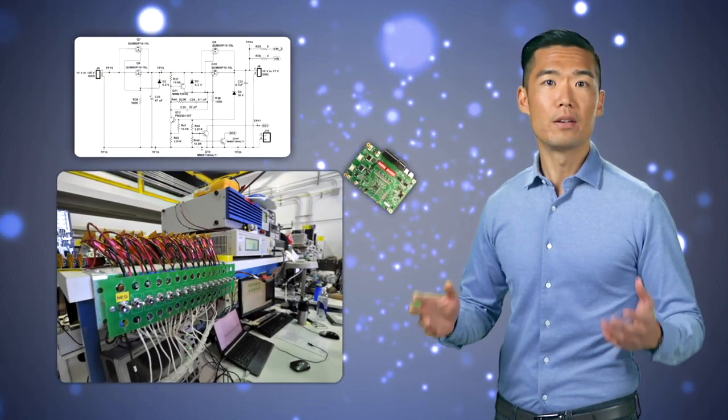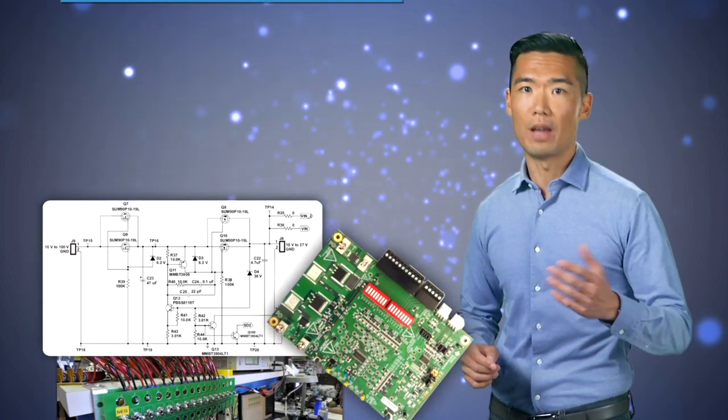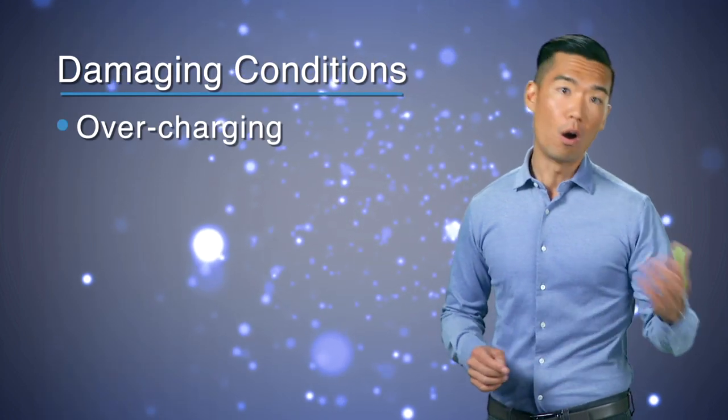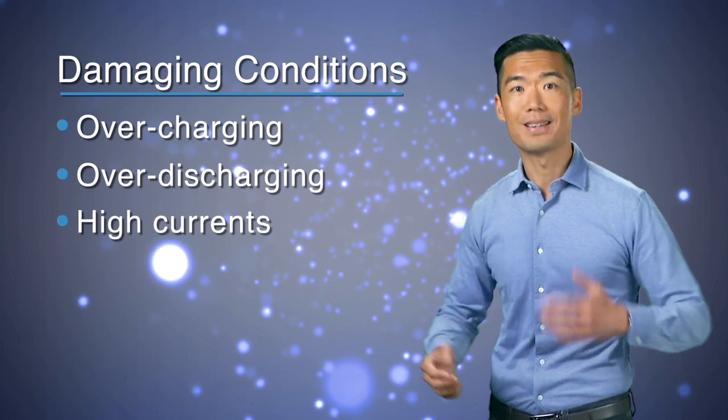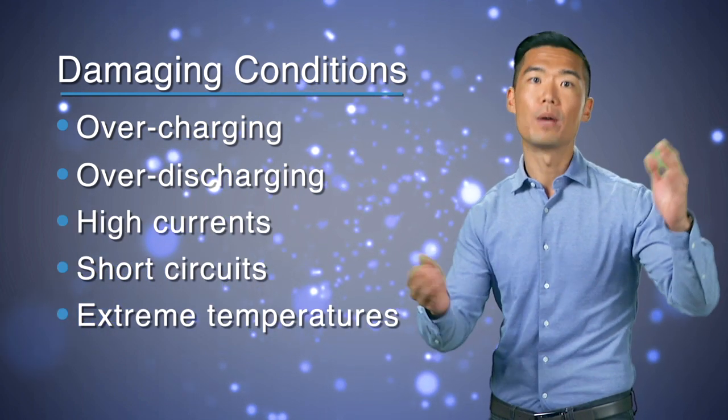To keep users and equipment safe, the electronics that are defined and developed around the battery cell are extremely important. These components help ward against a host of damaging conditions, such as overcharging or over-discharging, excessively high currents or even short circuits, and extreme hot or cold temperature operation.